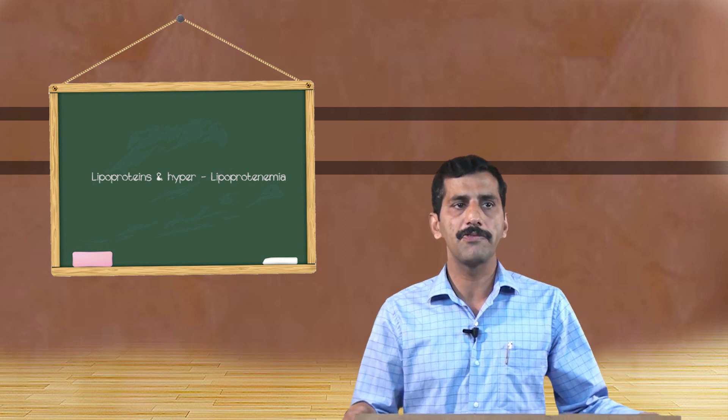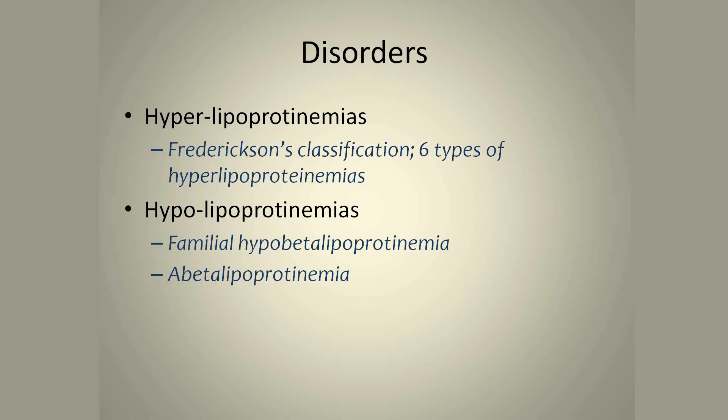Coming to the disorders associated with lipoproteins, there are two types: hyperlipoproteinemia and hypolipoproteinemia. Hyperlipoproteinemia is where there is an increased level of different types of lipoproteins in the body. Fredrickson's classification describes six different types. Type 1: deficiency of lipoprotein lipase, which increases the concentration of chylomicrons in the blood. Type 2 has two subtypes — Type 2a: deficiency of LDL receptor, which increases LDL concentration; Type 2b: increase in both chylomicrons and LDL.